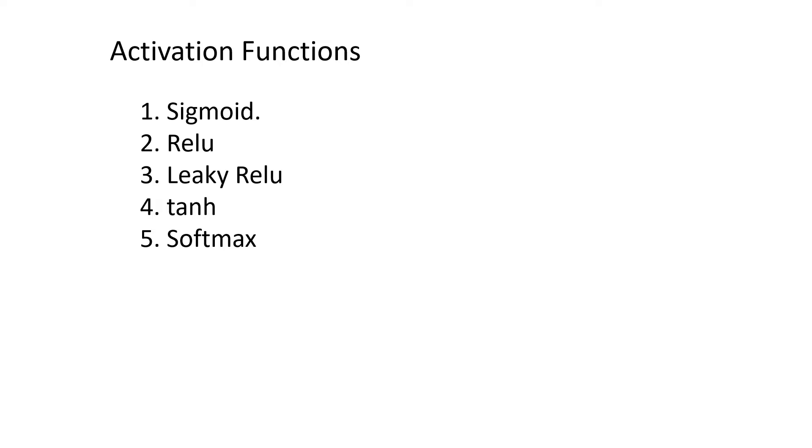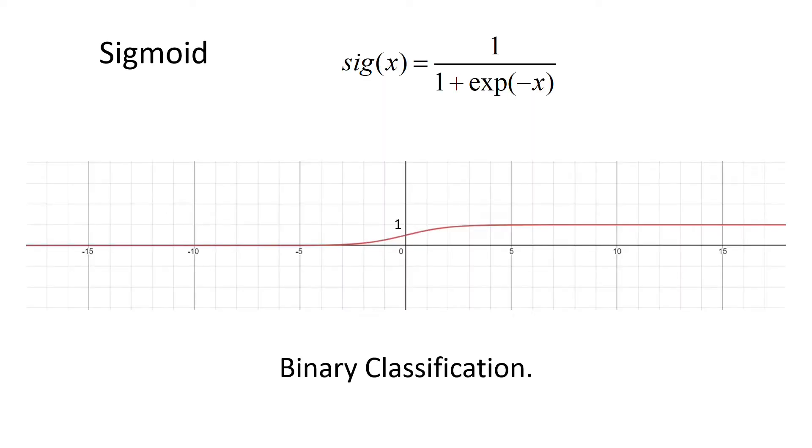So the first one is sigmoid, this is I think the most famous and it is used for binary classification as you can see in the bottom I have written here. So this particular equation is the equation for sigmoid: 1 over 1 plus exponent of minus x, simple as that.